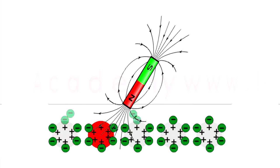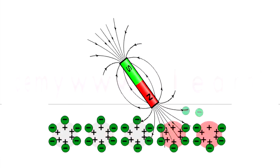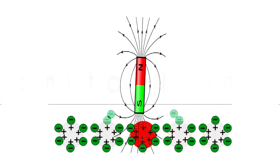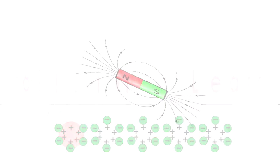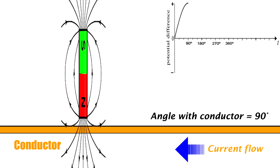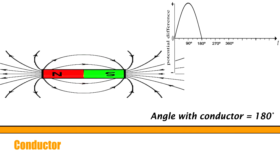In AC, both the south and north poles of the magnet induce EMF on a single conductor, resulting in the current flow in both directions. Now see these slides to understand the nature of the curve indicating the EMF induced in different positions of the magnet.